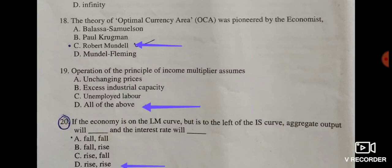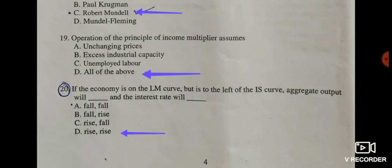Question eighteen: the theory of optimum currency area was developed by which economist? Options include: Balassa and Samuelson, Paul Krugman, Robert Mundell, or Fleming. The correct answer is option C: Robert Mundell. Question nineteen: the operation of the principle of the income multiplier assumes — unchanging prices, excess industrial capacity, unemployed labour, and all of the above. The correct answer is option D: all of the above.